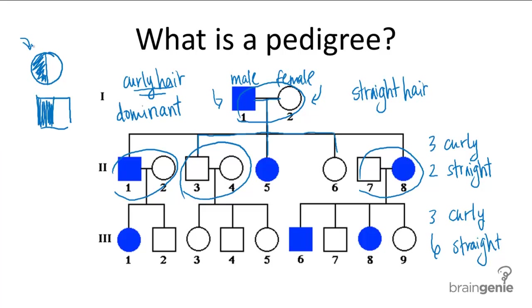And carriers are not always shown. So be careful when reading a pedigree chart. Just because it doesn't have half colored in individuals does not mean that it's a dominant trait. So this is how you read pedigree charts. And pedigree charts are useful tools for analyzing patterns of inheritance.